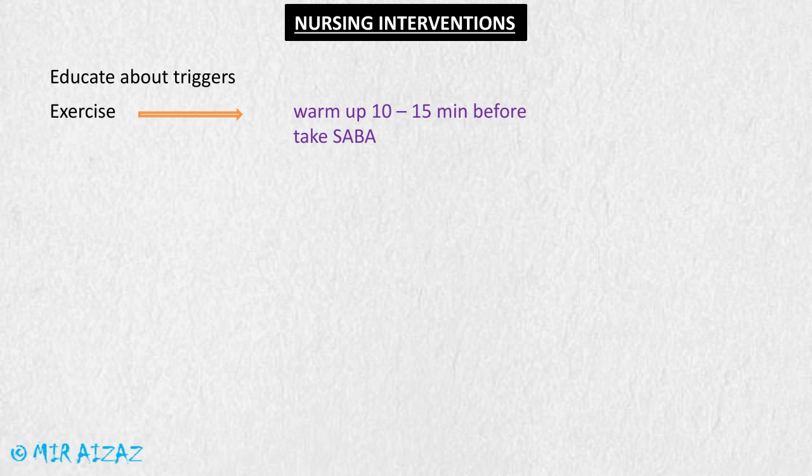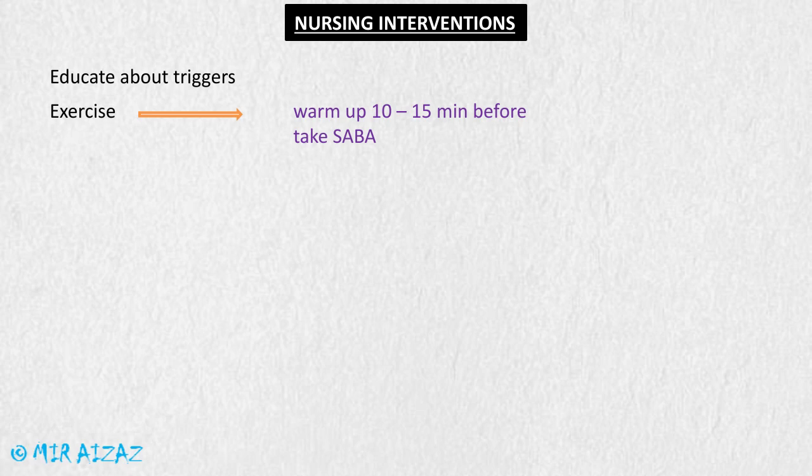To prevent an exercise-induced asthma attack, the patient is advised to do a warm-up 10 to 15 minutes before starting exercise and is instructed to take a short-acting beta agonist before starting exercise, as this considerably decreases the chances of developing an asthma attack.